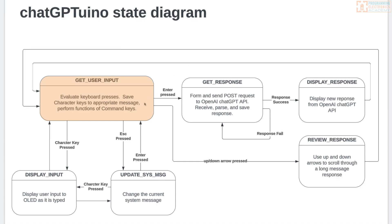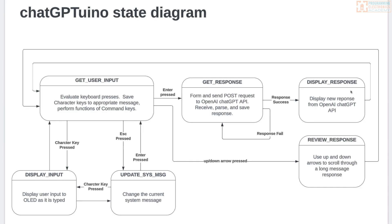If you get to 'get user input' and want to read the beginning of a long message, you enter a new state by pressing the up or down arrow. That brings you to the 'review response' state, which moves the display text on the OLED either up or down depending on which button you press. After pressing the arrow once, you're immediately brought back to 'get user input.' If you press the arrow again, you go through that cycle again as you scroll up or down.